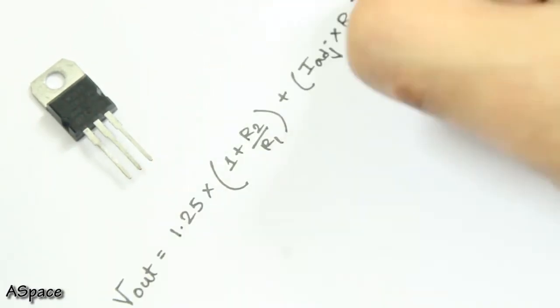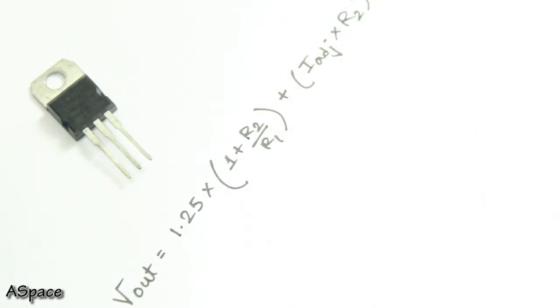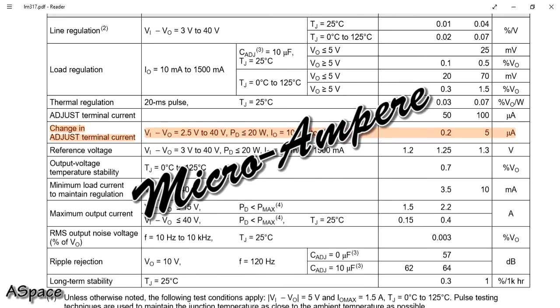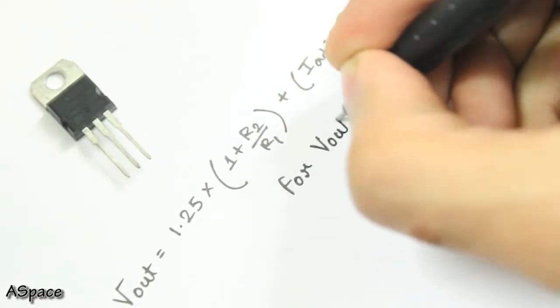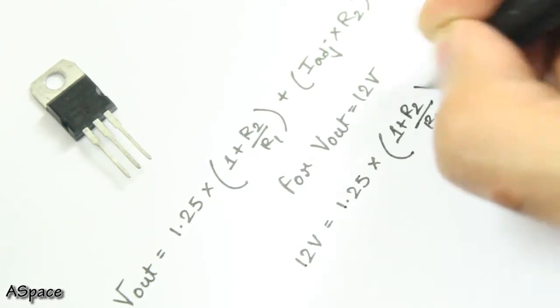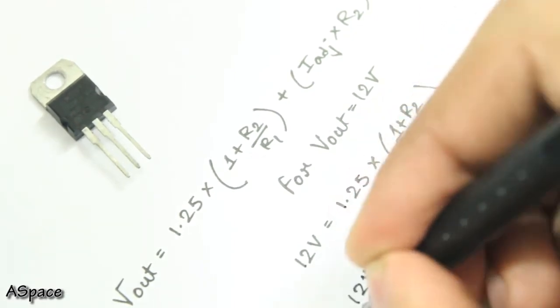Another important thing to notice is that the adjustable terminal current is way low, nearly 5 microamperes. So it is absolutely cool if we neglect it. For example, if you want your maximum output voltage to be 12V, then the formula can be simplified to a basic formula.